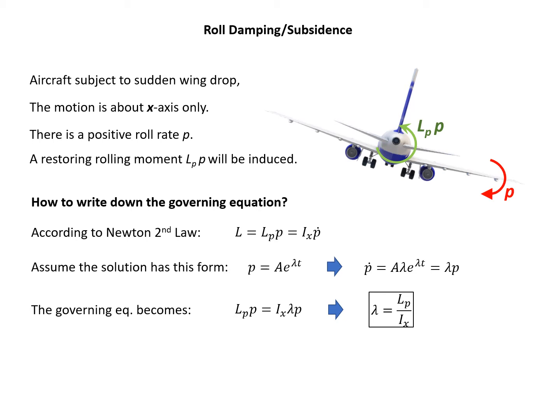We assume the rolling rate P equals A times e to the power of lambda t. Now we know lambda. Assume we know A, then P is known.